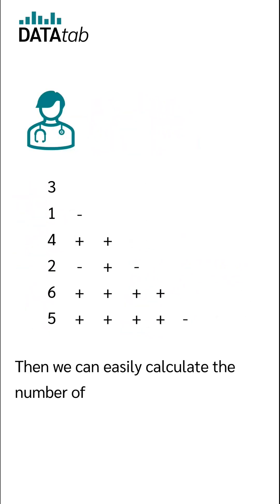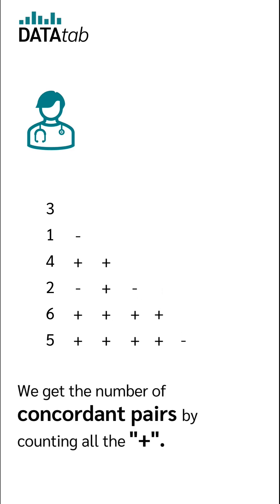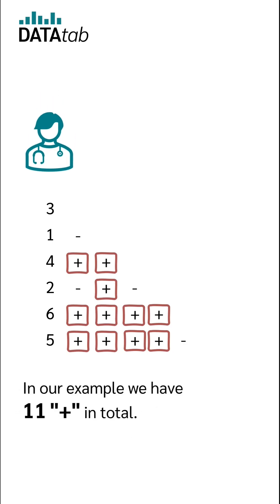Then we can easily calculate the number of concordant and discordant pairs. We get the number of concordant pairs by counting all the plus. In our example, we have 11 plus in total.